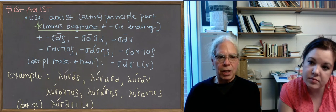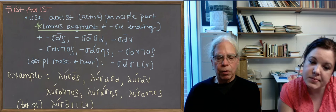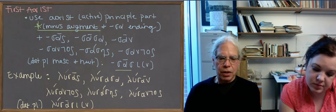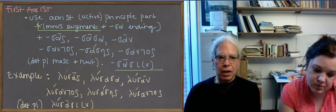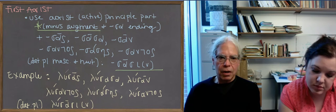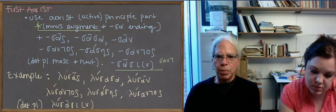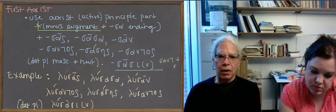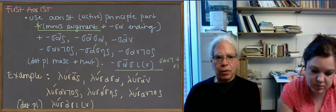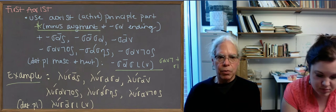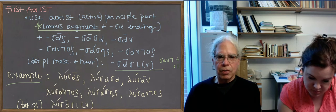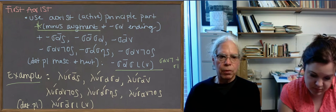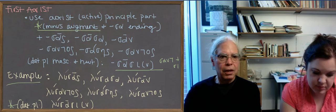The endings are the same. The dative plural in this case is not ousi, but sasi. It's s-a-n-t plus s-i. The n and the t disappear. And you get sasi with a long alpha. So there's our example verb, lusas, lusasa, lusan. Lusantos, lusasēs, lusantos. And the dative plural, lusasi.